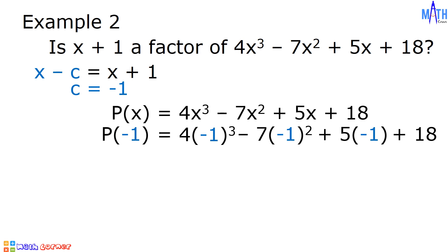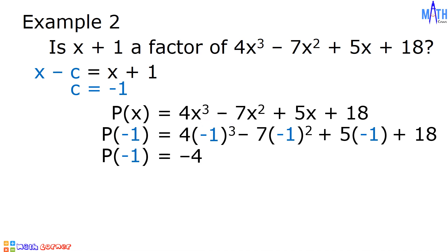Let us simplify. p of negative 1 equals the cube of negative 1, or negative 1 times negative 1 times negative 1, which is equal to negative 1. Negative 1 times 4 is equal to negative 4. Next, the square of negative 1, or negative 1 times negative 1, is equal to positive 1. Positive 1 times negative 7 is equal to negative 7.